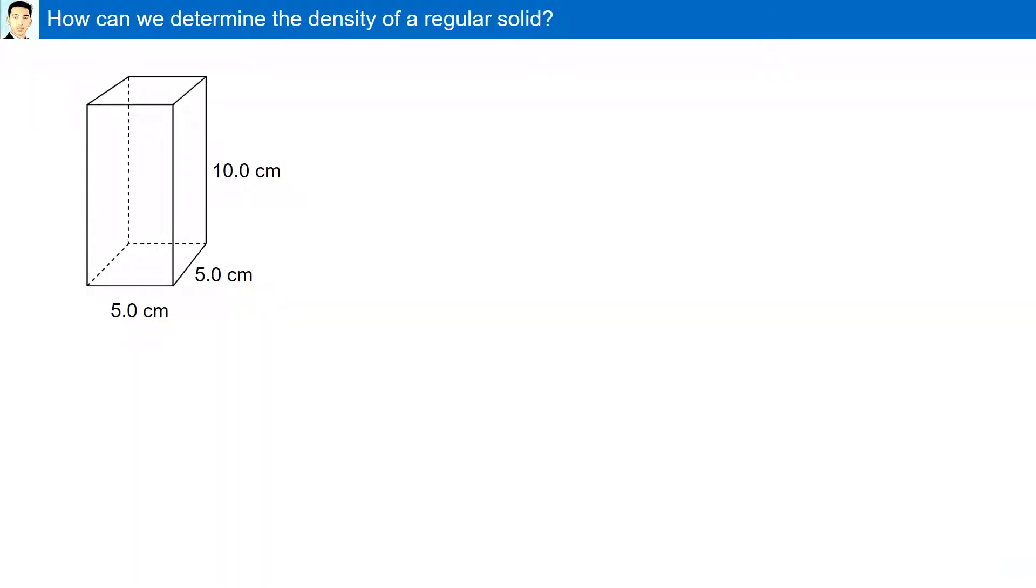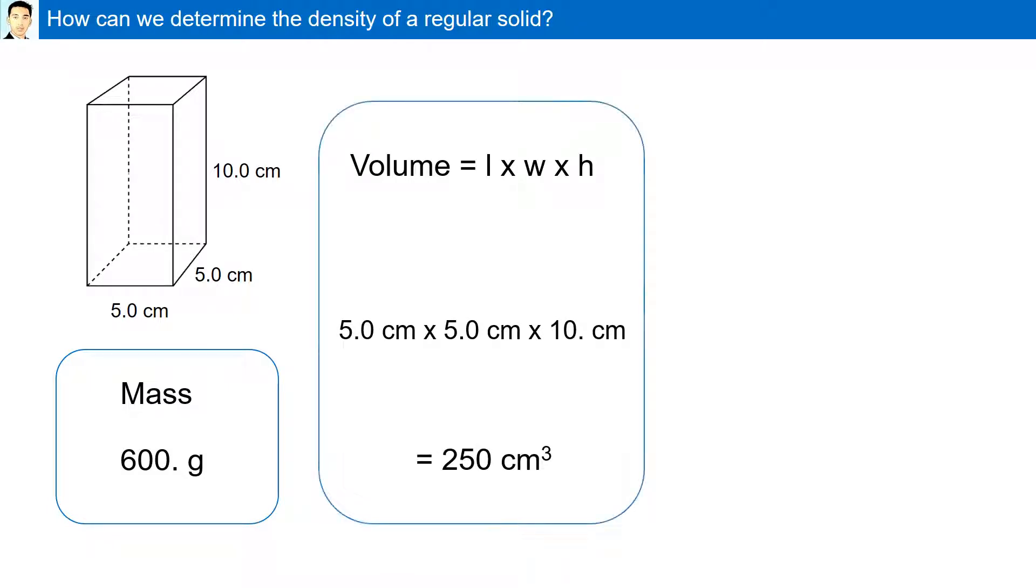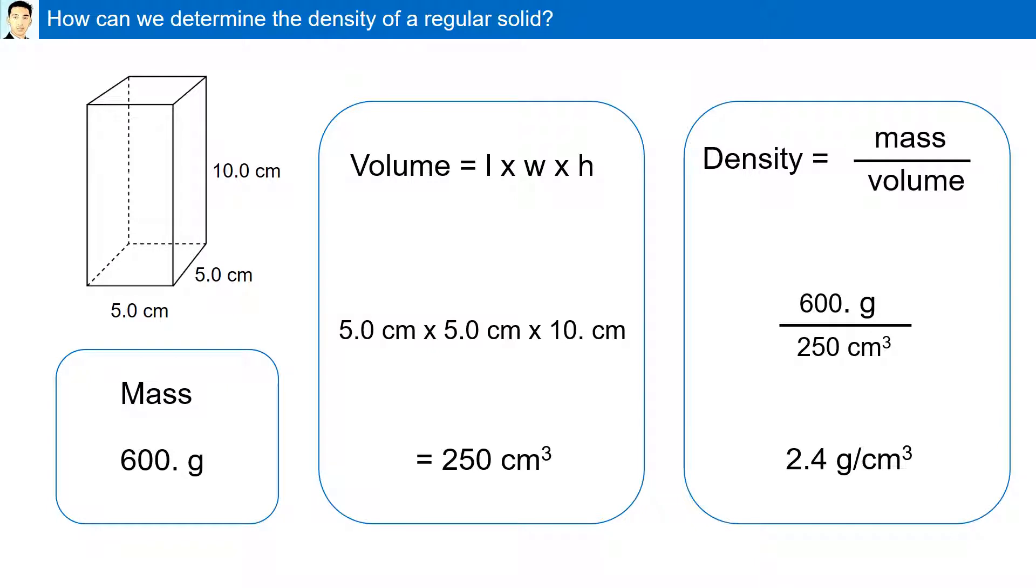How can we determine the density of a regular solid? First, we need to measure its mass. Here it is given as 600 grams. Next, we must determine its volume, which is length times width times height. Here, it is found to be 250 centimeter cube. Using these two data, we can calculate the density, which is the mass divided by the volume, 600 grams divided by 250 centimeter cube. The density of the solid is 2.4 grams per centimeters cube.